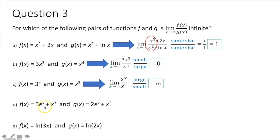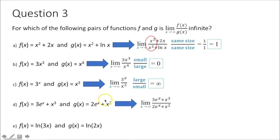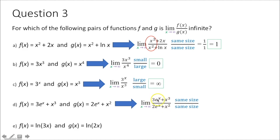For part d, both numerator and denominator contain e to the x terms. Since x is in the exponent, these dominate over everything else. Because both have e to the x, they have the same degree, so we use leading coefficients: the limit as x approaches infinity equals 3 over 2.